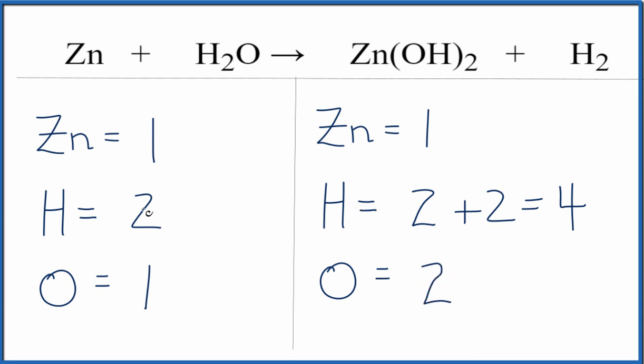So it looks like our hydrogens and our oxygens aren't balanced. If I multiply this by two, that would give me four, and that would balance the hydrogen. So I'll put a coefficient of two in front of the H2O.